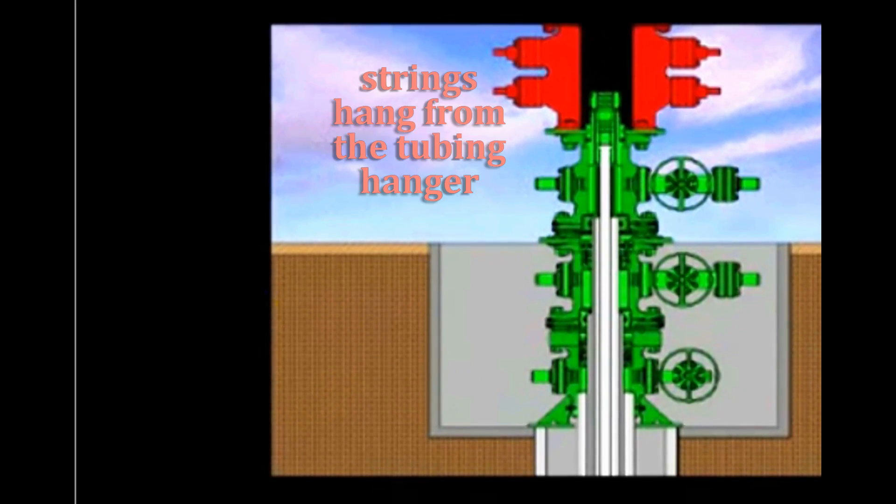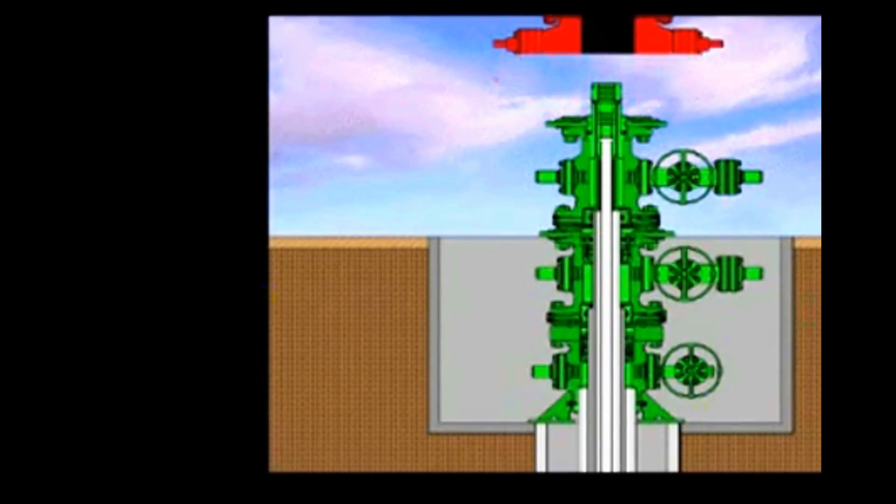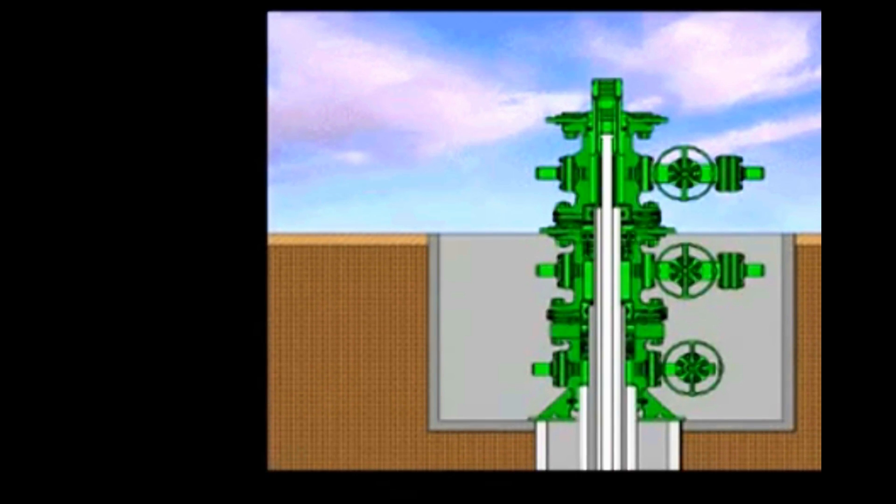Here you can see that these strings hang from the tubing hanger in the wellhead and are retrievable, unlike the permanent casing strings.